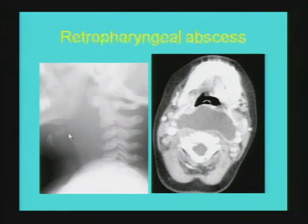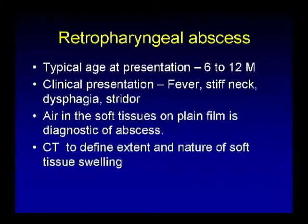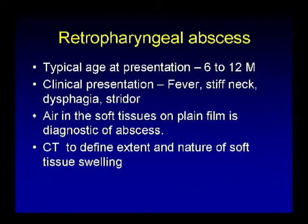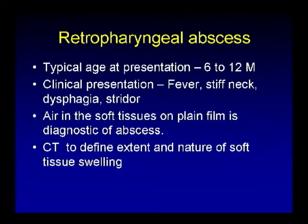There is compression of the hypopharyngeal and supraglottic airway, and CT scan shows a fluid-attenuation rim-enhancing collection in the retropharyngeal space. Typical age of presentation is in younger children, with 6 to 12 months being peak incidence. Clinical presentation is classical with stiff neck, dysphagia, and stridor. Radiographs are not very reliable to differentiate retropharyngeal cellulitis from abscess; if air within the soft tissues is demonstrated on plain film, it is diagnostic of abscess. CT is performed in almost all cases to differentiate location and nature of the swelling.